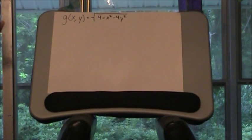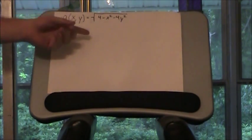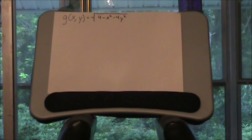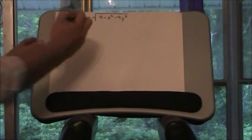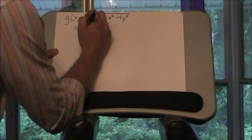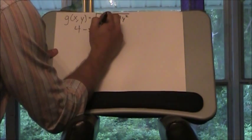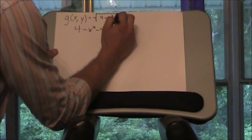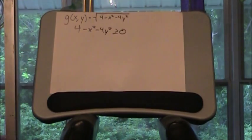So to start off, if you were doing this in calc 1 with a one variable function and you had something inside the square root, say the square root of 3 minus x, you would set 3 minus x greater than or equal to zero. And we'll do the same thing here, we're going to set 4 minus x squared minus 4y squared has to be greater than or equal to zero. Because anything that wasn't greater than or equal to zero would be the square root of a negative, that can't happen.